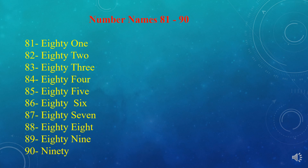Here you can see number names 81 to 90. Let's read: 81 — EIGHTY-ONE; 82 — EIGHTY-TWO; 83 — EIGHTY-THREE; 84 — EIGHTY-FOUR; 85 — EIGHTY-FIVE; 86 — EIGHTY-SIX; 87 — EIGHTY-SEVEN; 88 — EIGHTY-EIGHT; 89 — EIGHTY-NINE; 90 — NINETY.